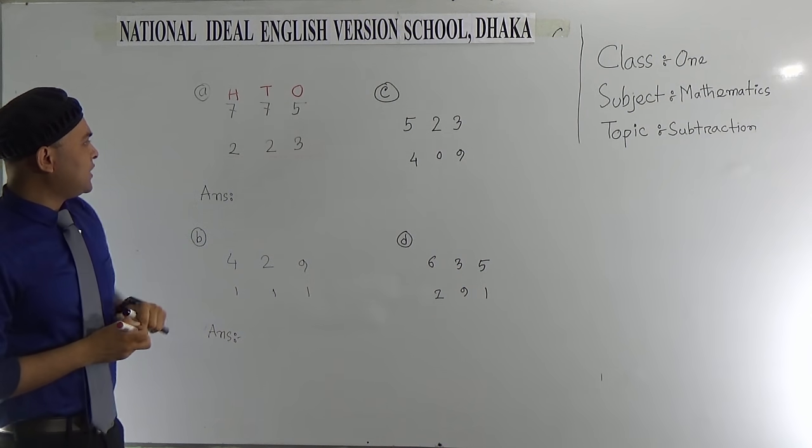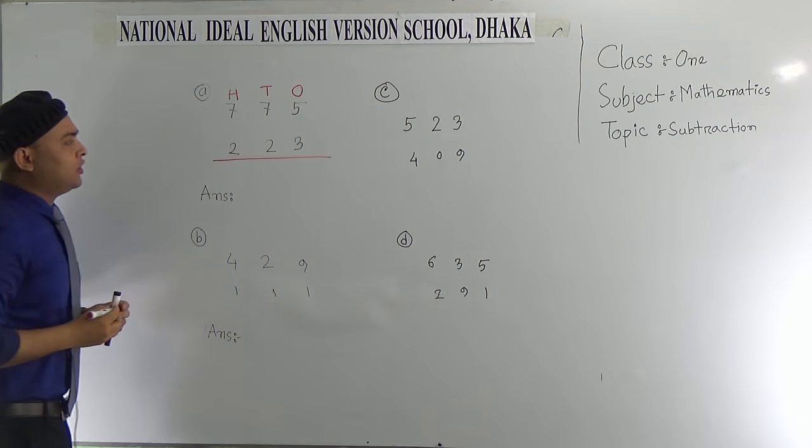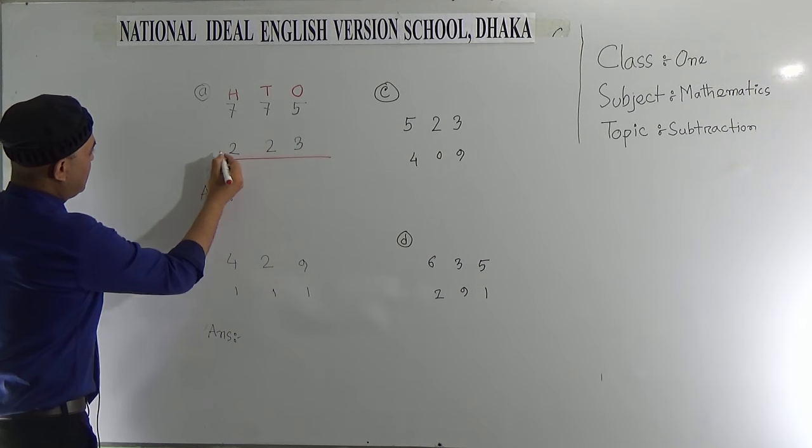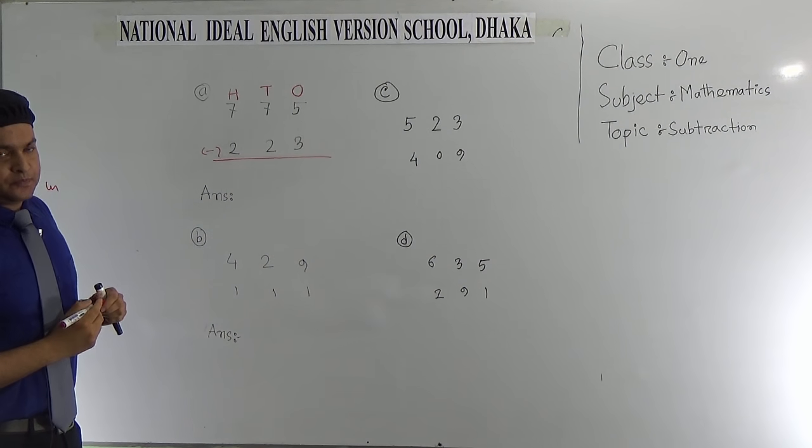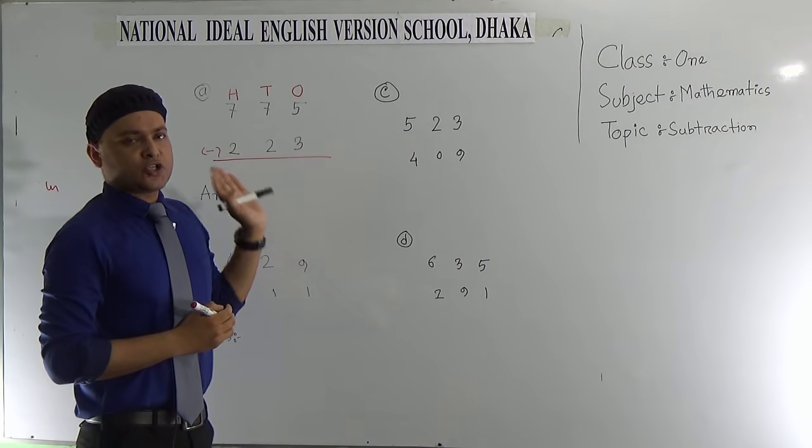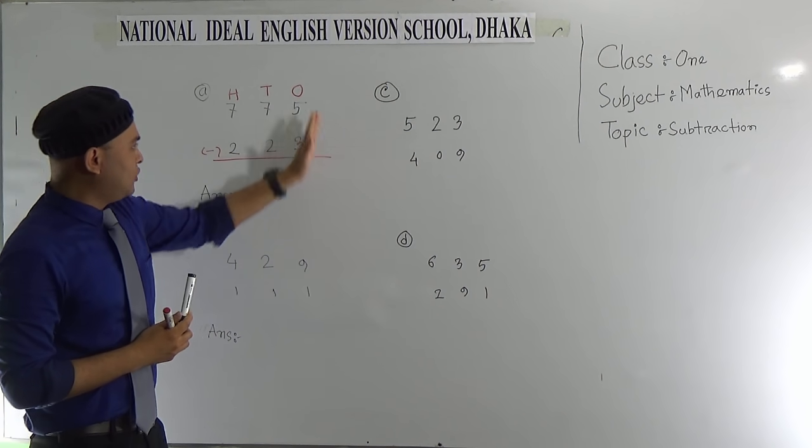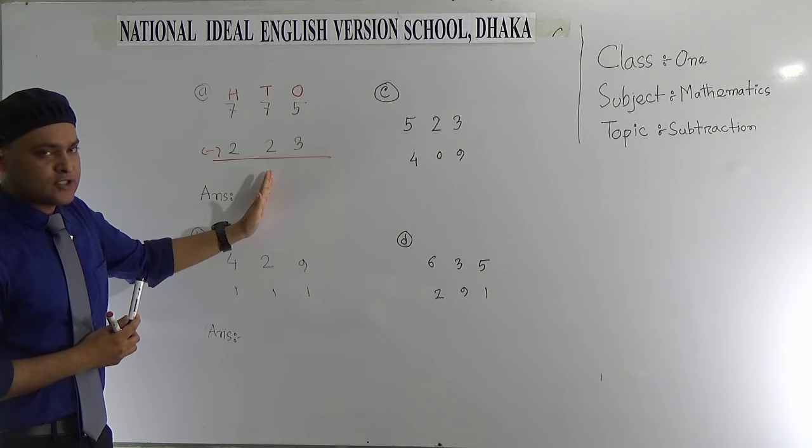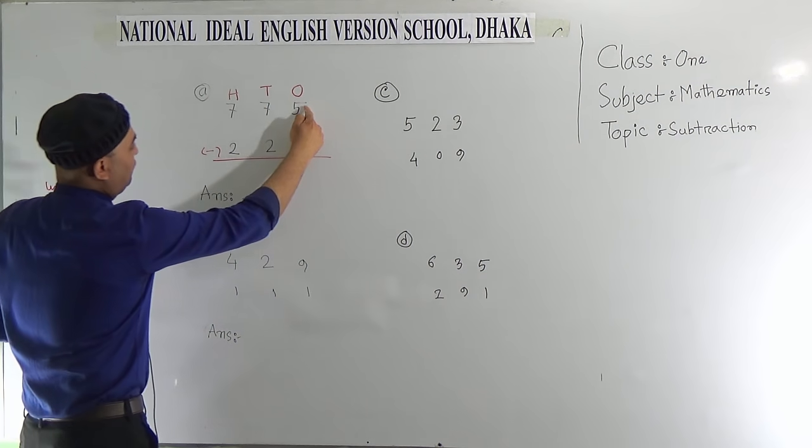Now we can draw a line for being the answer below it and take a minus sign to show that we are making subtraction. Now start. We know that for addition and subtraction we will start from the 1's column. We know this is 1's column, this is 10's column, and this is 100's column.